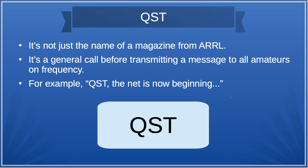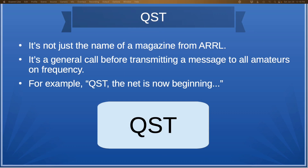QST — it's not just the name of a magazine from the ARRL. It's a general call before transmitting a message to all amateurs on frequency. When might you hear this? It might be at the beginning of a net — like, "QST, the net is about to begin." Amateur Radio Newsline, for example, used to say "QST, all radio amateurs" and then go into the program. QST is just a way to get everyone's attention with a general call for everybody.